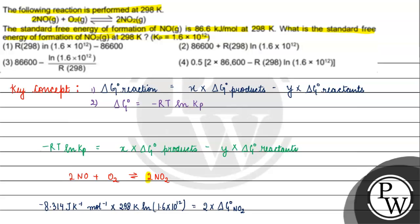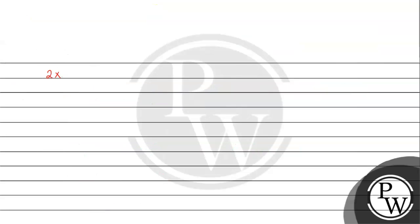This equals the stoichiometric coefficient of product — 2 — into ΔG° of NO₂. For oxygen, ΔG° is zero because it is in its standard state. Then for NO, the stoichiometric coefficient is 2, so we have minus 2 into ΔG° of NO. Writing this fully: 2 × ΔG°(NO₂) − 8.314 J per Kelvin per mol × 298 Kelvin × ln(1.6 × 10 raised to the power 12).